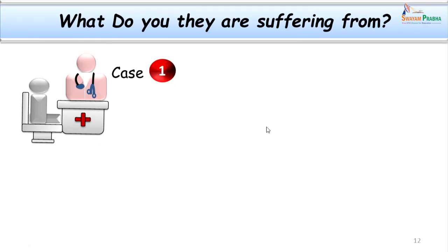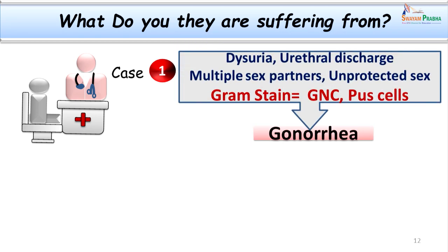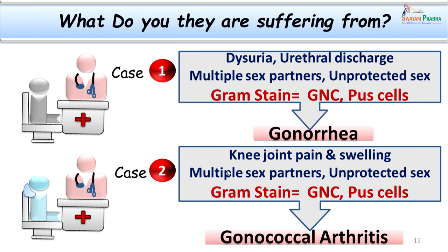Now since we have the evidence of microscopy, we can be more sure of the diagnosis. Case number 1 — the patient is suffering from gonococcal urethritis. We made this diagnosis taking into consideration the typical clinical presentation of dysuria, urethral discharge, and also having unprotected sex. The gram stain also supported this case, showing multiple pus cells and gram-negative diplococci. Case number 2 also gave us evidence of the presence of gonococci in the joint fluid. The points in favor include joint involvement which is common in young women, the swollen and inflamed knee, her being a commercial sex worker, and the gram stain supporting our clinical findings. Hence, we made the diagnosis of gonococcal arthritis in this case.